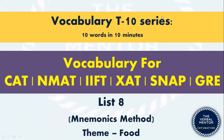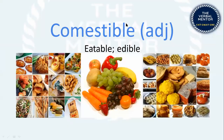Hello guys, this is List 8 of our VocabEat series. The theme today is food, and the method uses mnemonics. The first word is 'comestible' — comestible means eatable, edible. It's an adjective.